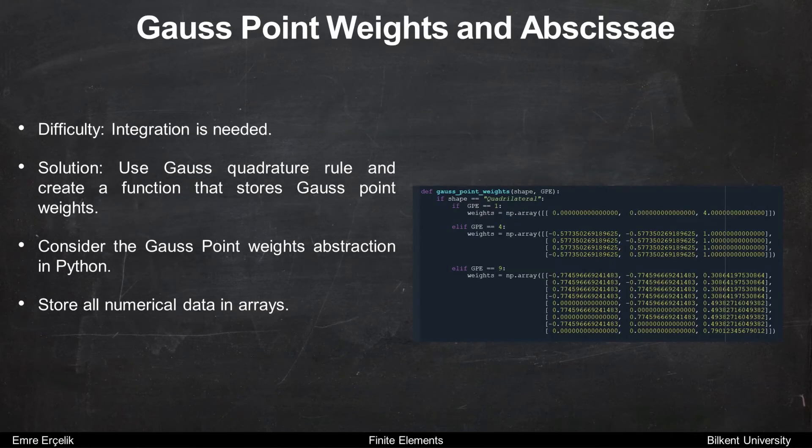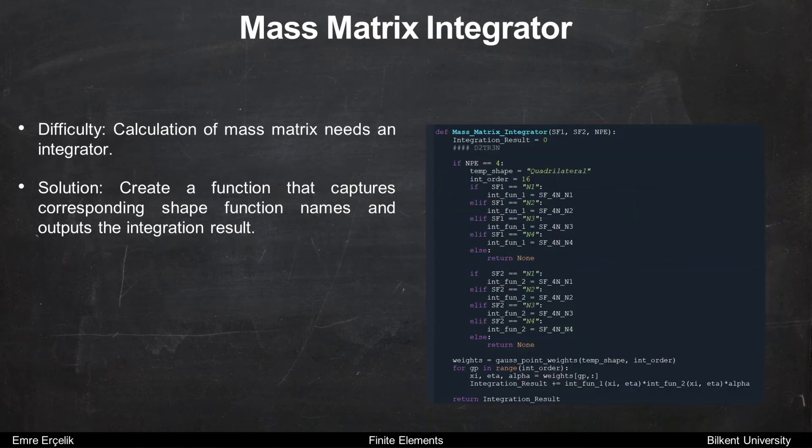Another difficulty originates from integration. We are familiar with the gauss point function. This function is the same with your gauss point function, but it's in array form. We need integration over the mass matrix. And we can create a function to integrate any shape function with any shape function. We can create a function that captures corresponding shape function names and outputs the integration result.